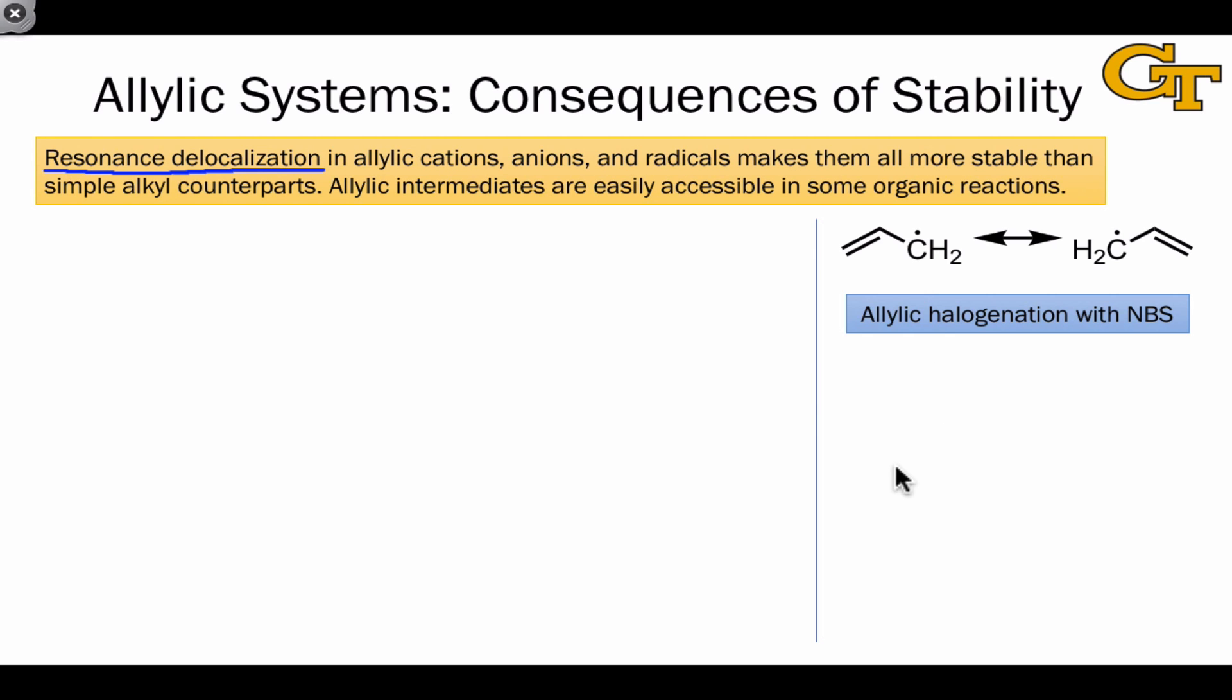For instance, the allyl radical figures prominently into allylic halogenation with NBS. A molecule like propene actually contains a few different types of hydrogens that could be abstracted in the course of a radical halogenation reaction with the NBS reagent. However, the allylic position reacts selectively because this reaction involves a radical intermediate.